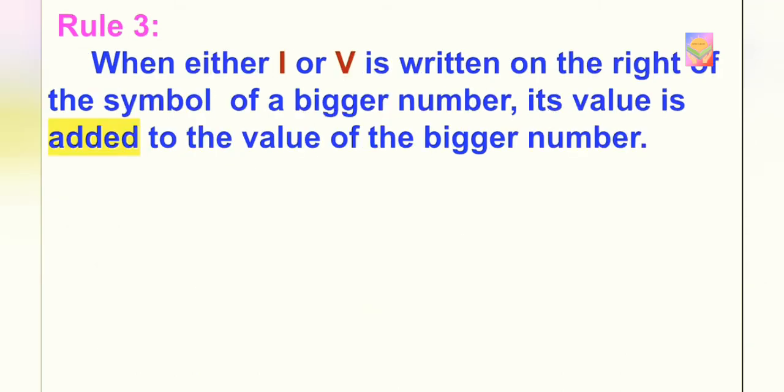Now let's move to rule number 3. When either I or V is written on the right of the symbol of a bigger number, its value is added to the value of the bigger number. Let's see by taking an example. Suppose, if you write I on the right of V, the value will become 5 plus 1 is equal to 6.